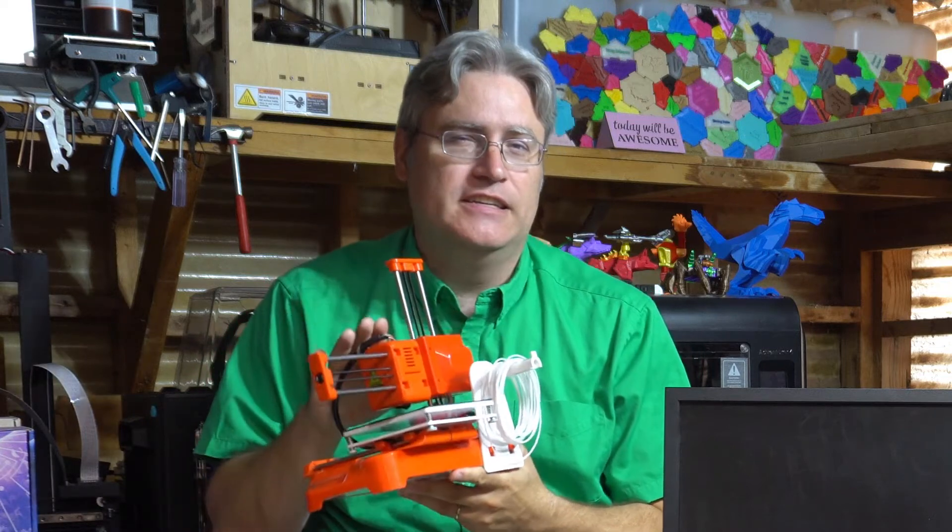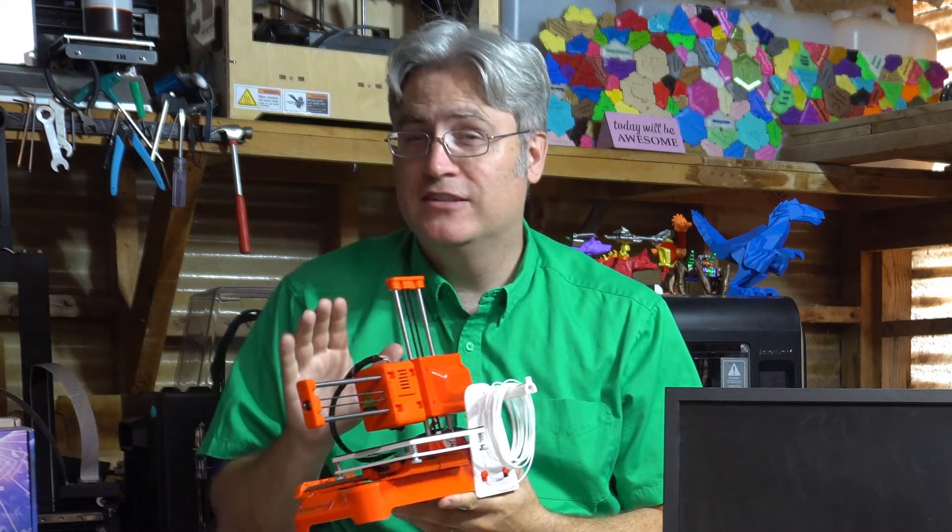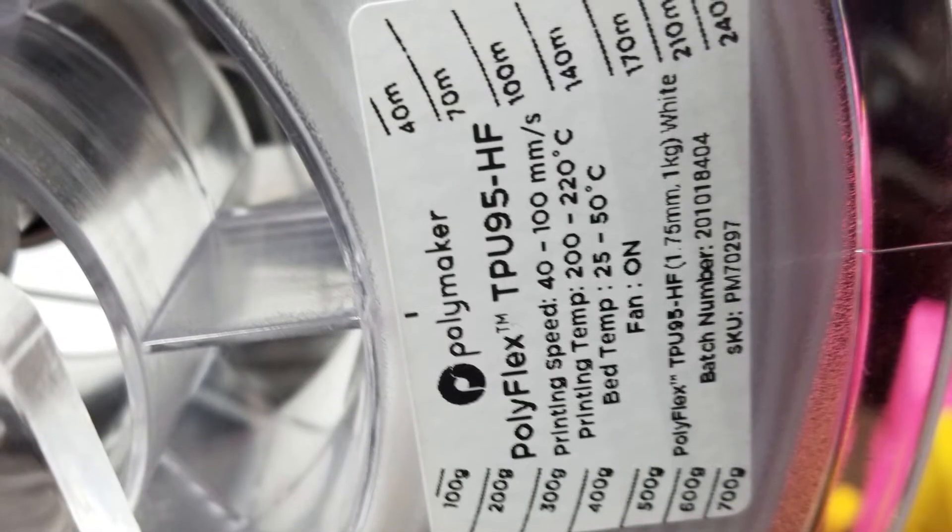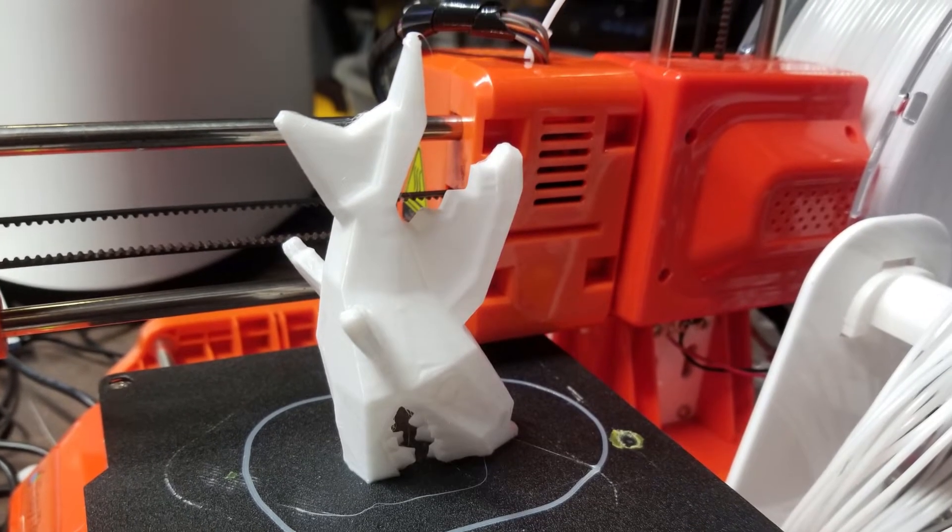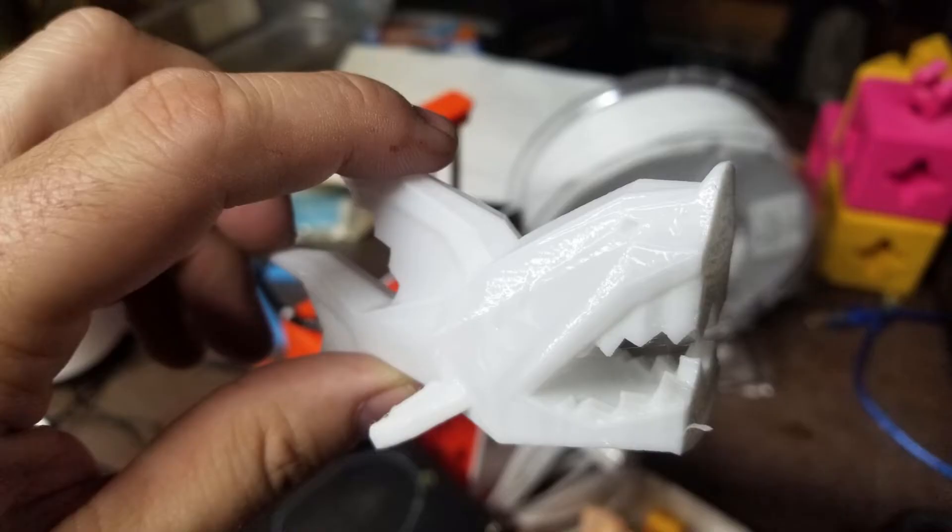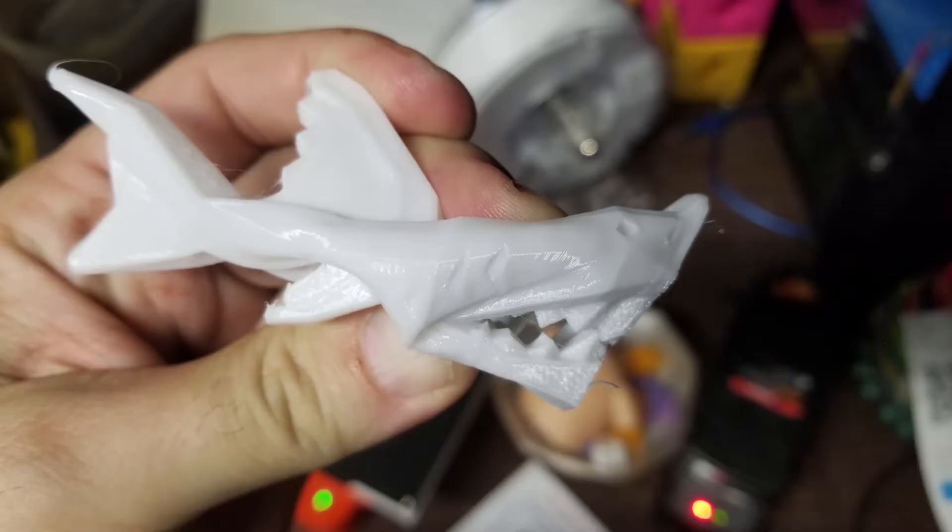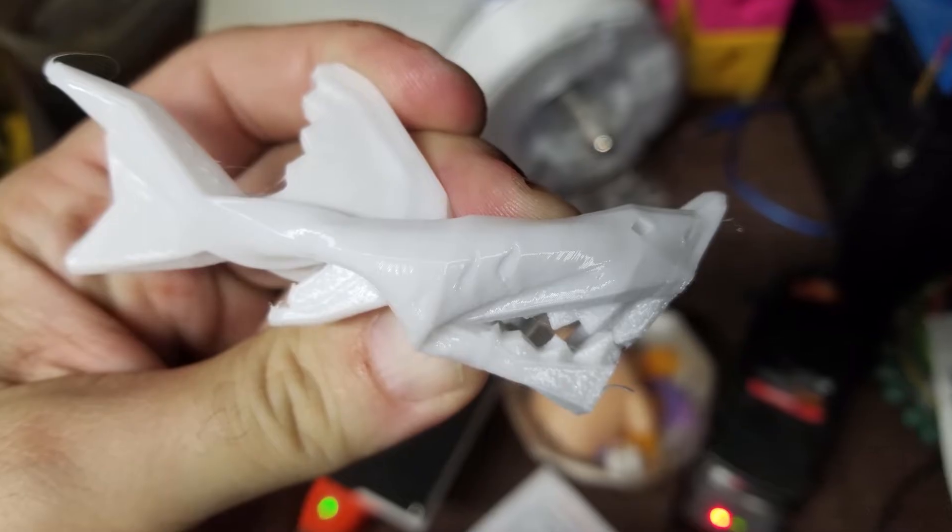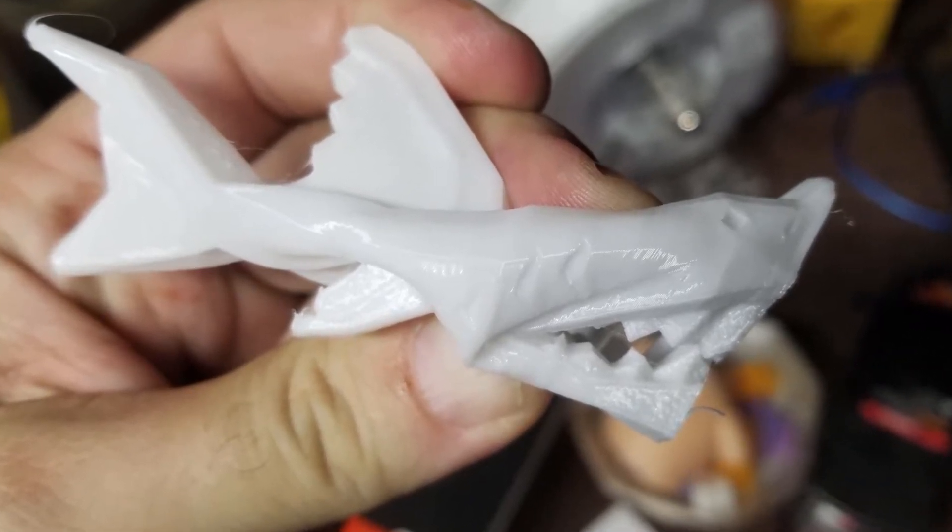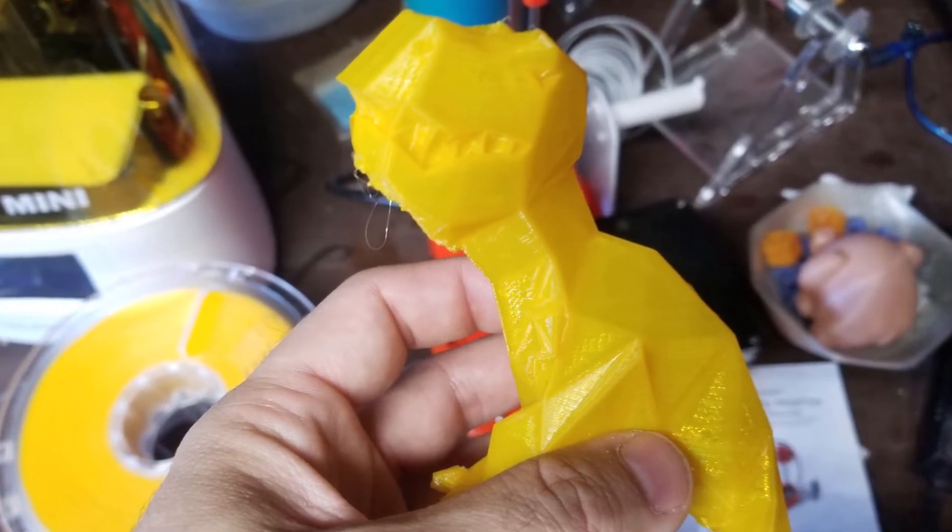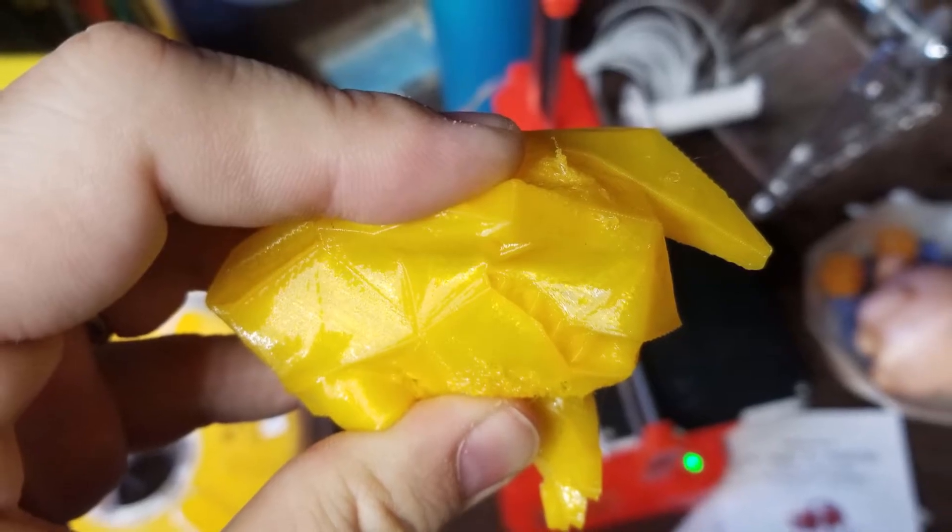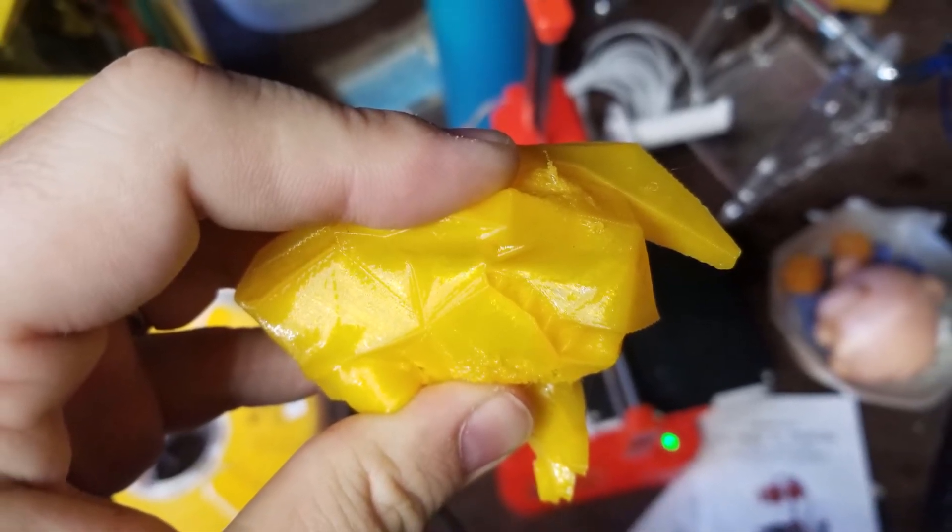I started with some Polymaker Polyflex 95. This stuff is barely flexible. If you only print one shell or just the shells and no infill, it works. And, it's kind of flexible. You can squish that low poly megalodon just like a squishy toy. Okay, it can do flexibles. What if I do something a little bit softer? I moved to Polyflex 90. This is slightly softer. Again, I printed it with no infill so that it'll be squishy. And, it printed like a champ.